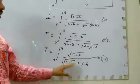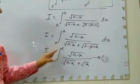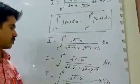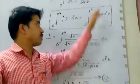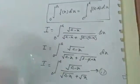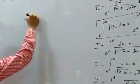We observe in equation number 1 and equation number 2, the range of integration is same, 0 to A and 0 to A. Denominator is also same. So we are going to add equation number 1 and equation number 2.